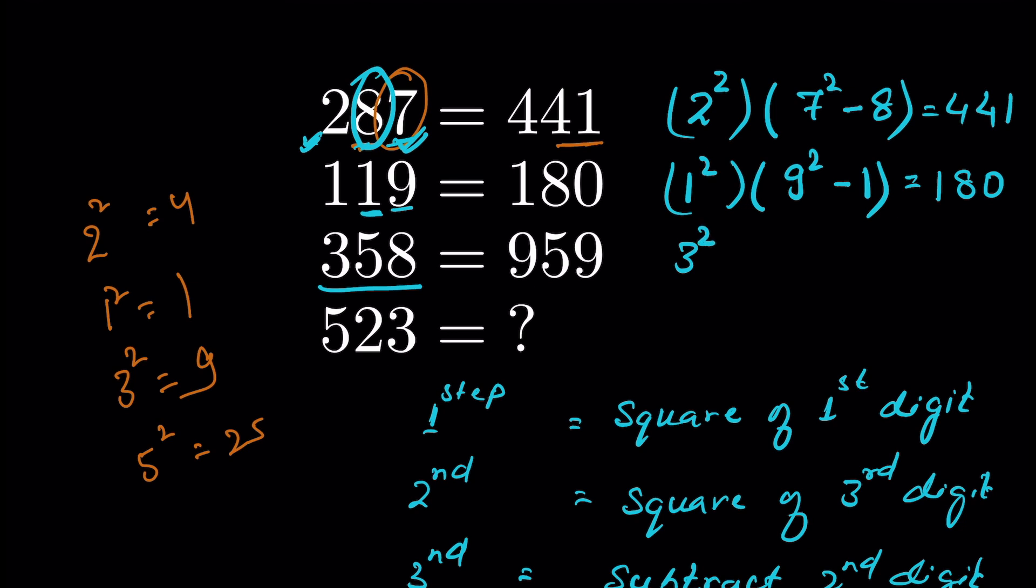Square of first digit is 3 squared. Square of 8 minus 5. It should be 8 squared is 64, and 64 minus 5 is equal to 59. So this is 959.